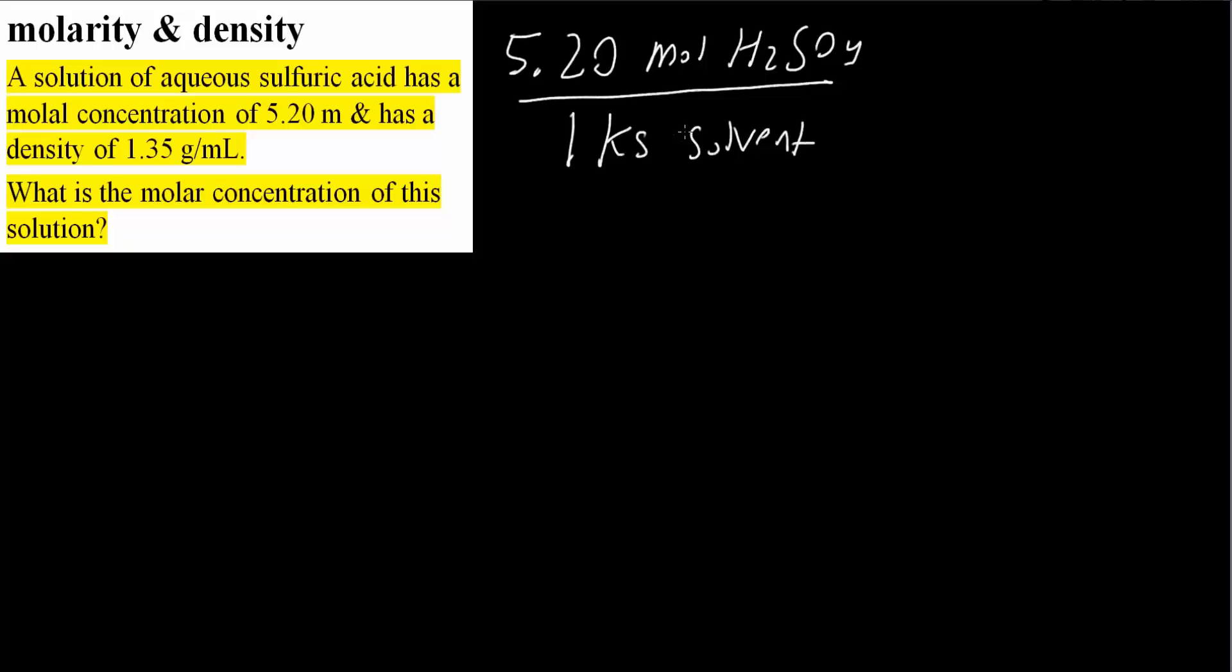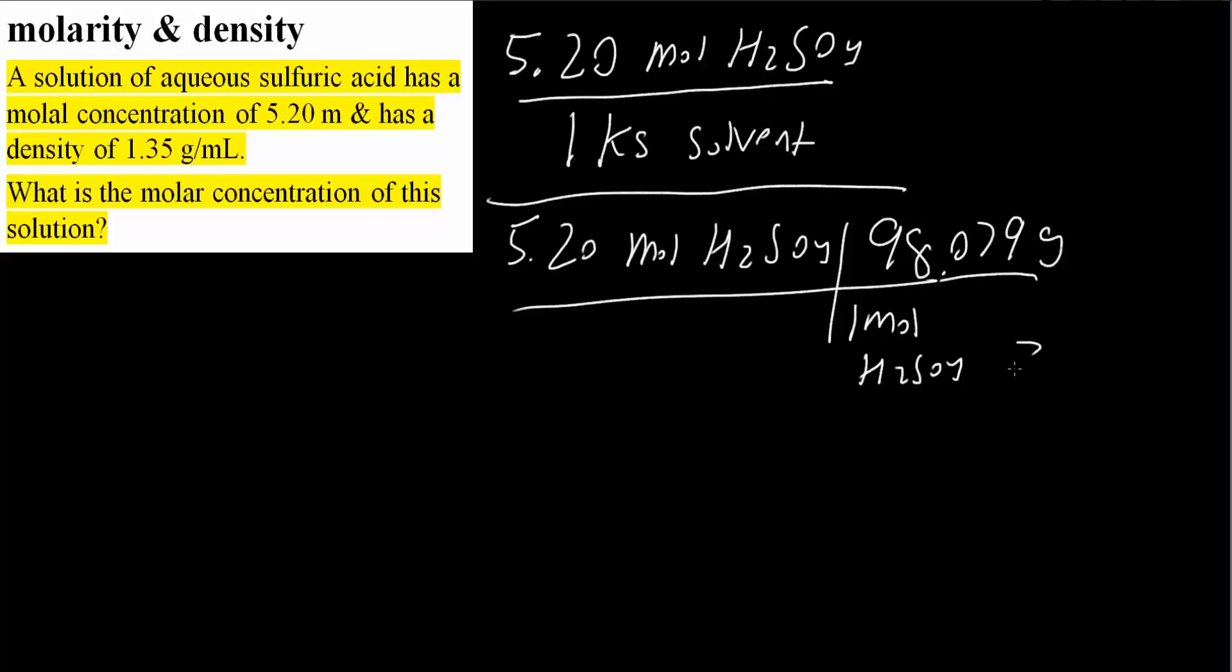So we have 5.2 moles of H2SO4 and we know that one mole of H2SO4 contains 98.079 grams, and so we would get 510 grams of H2SO4.